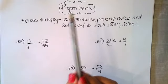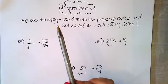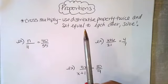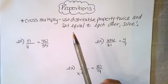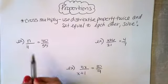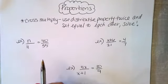The way that you solve a proportion is a process called cross-multiplying. You're going to use the distributive property twice and then set each of them equal to each other and solve. We're going to start simple and then get a little bit harder.